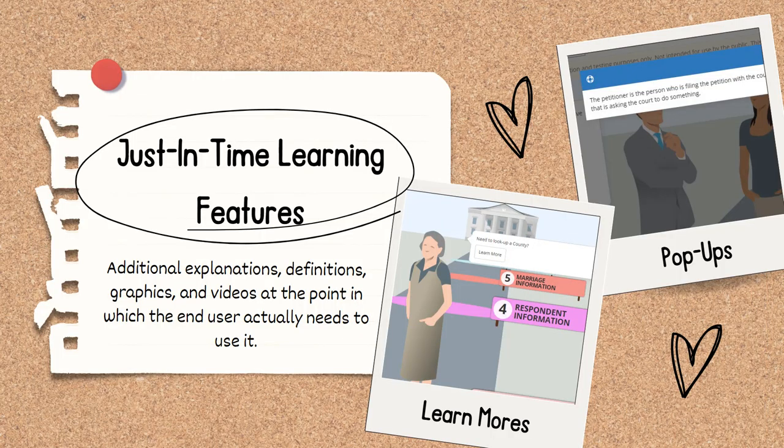Let's talk now about the just-in-time learning features of learn mores and pop-ups. A to J Author was designed for self-represented litigants. Besides our avatars, the thing that sets us apart and puts the focus on self-represented litigants is our just-in-time learning tools. Just-in-time learning features are tools within A to J Author that allow you to provide additional information, explanations, and definitions just at the point in the interview in which the end user will need that help. This can be in the form of text, graphics, and/or videos.